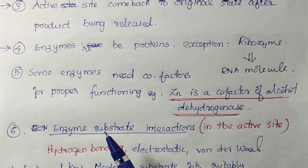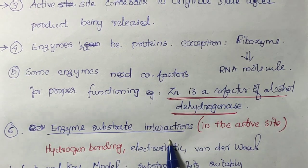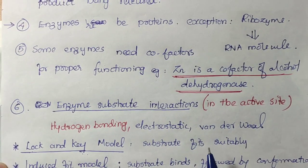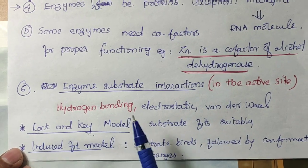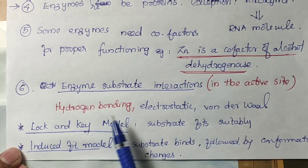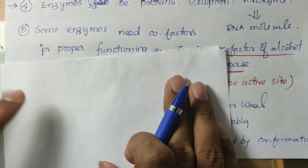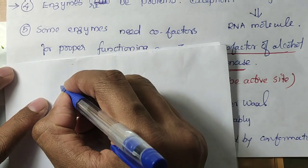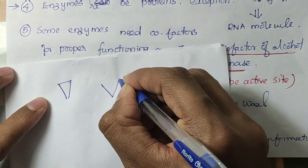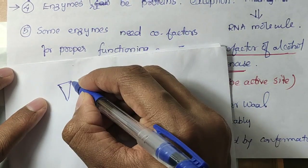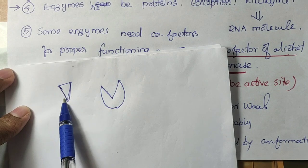Enzyme-substrate interaction in the active site can be through hydrogen bonding, electrostatic interactions, or van der Waals forces. There are two main mechanisms proposed for enzyme-substrate binding. The first one is the lock-and-key model. In this model, the enzyme has an active site and the substrate directly binds to that active site — there is no need for conformational changes.